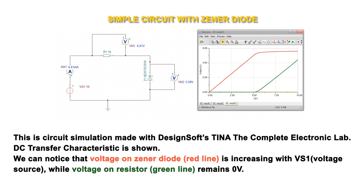We can notice that voltage on Zener diode, red line, is increasing with VS1 voltage source, while voltage on resistor, green line, remains 0 volts.